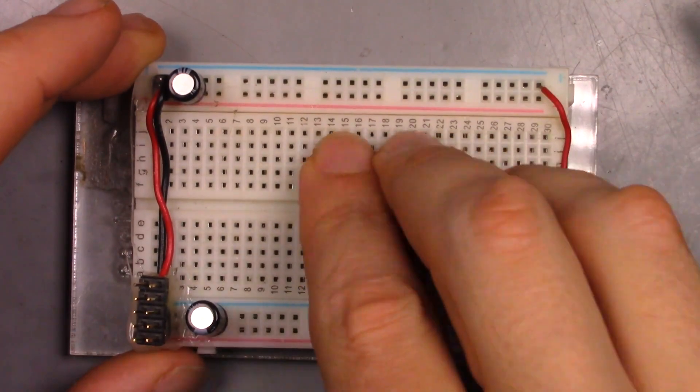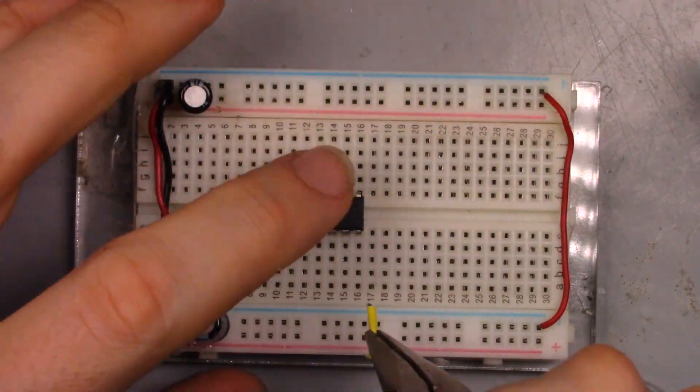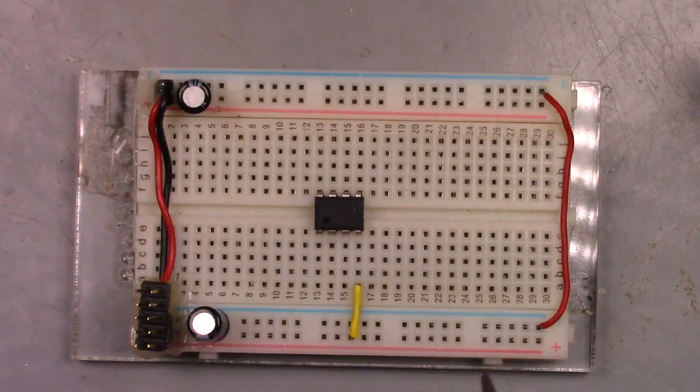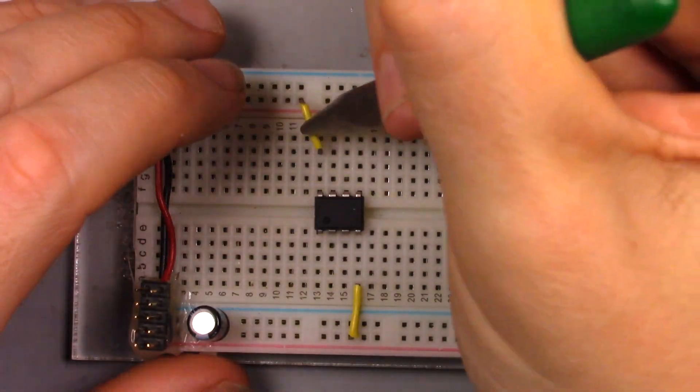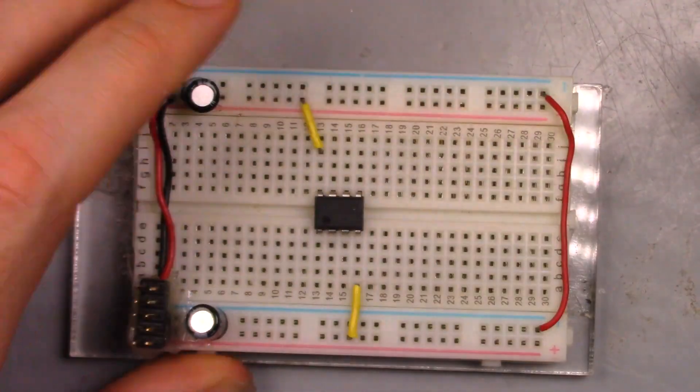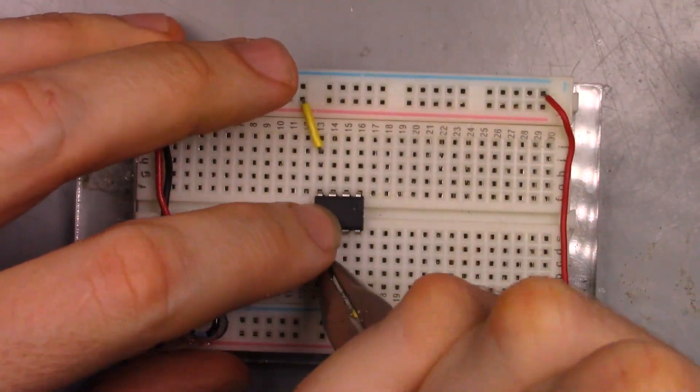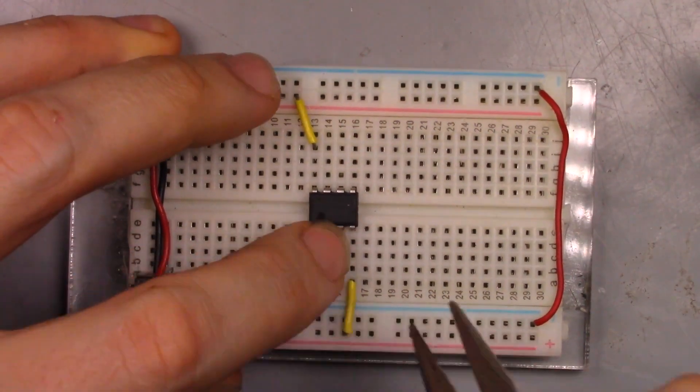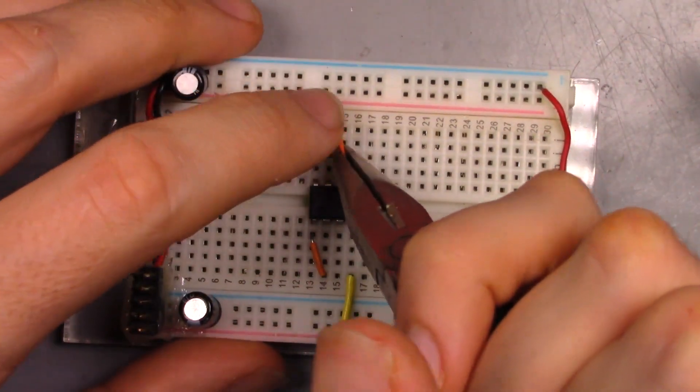To start breadboarding the circuit, we add the op amp chip, and then its power connections. Since both amplifiers are configured as unity gain followers, a jumper is placed from the outputs to the negative inputs.